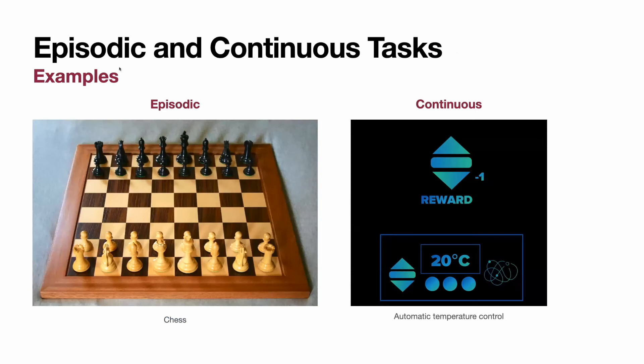Here are the examples of episodic and continuous tasks. Episodic is chess, we already discussed it. Continuous could be automatic temperature control with air conditioner. Air conditioner is an AI agent which is penalized by minus 1 every time a human touches a control. It doesn't matter which control.